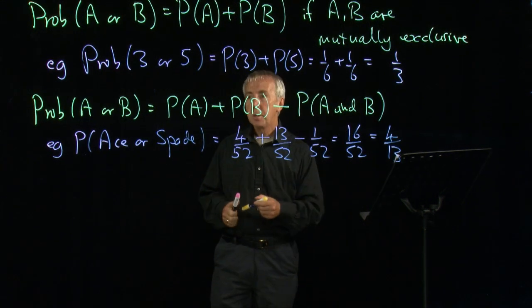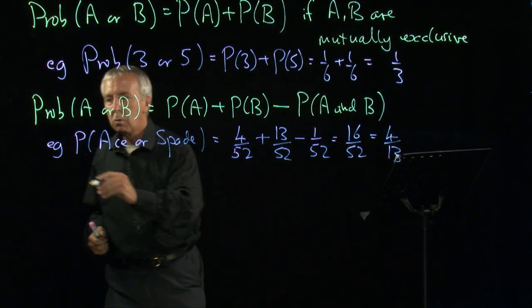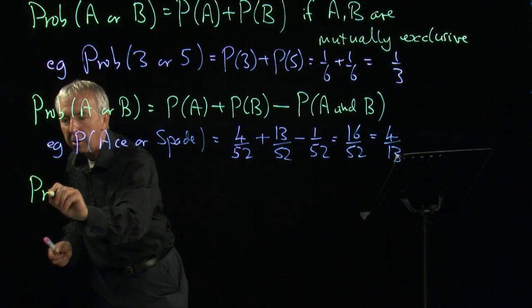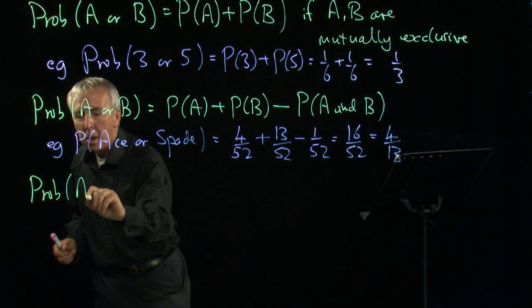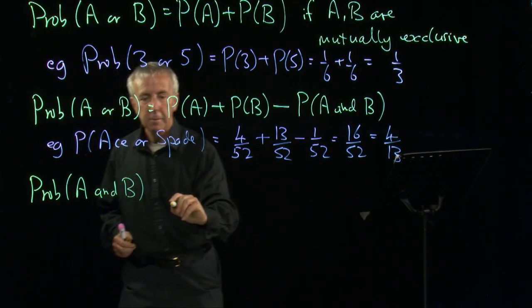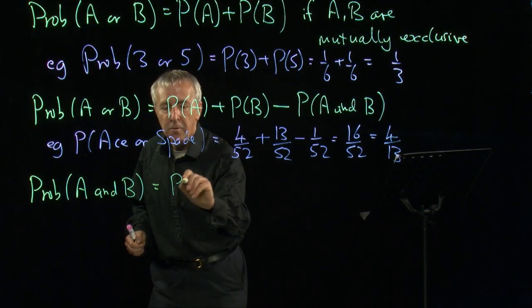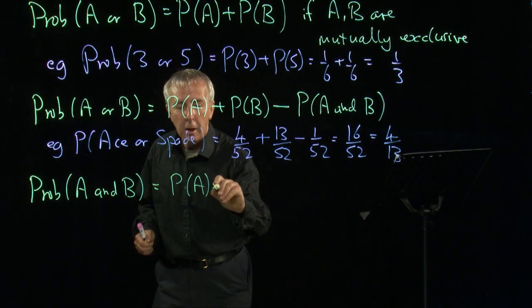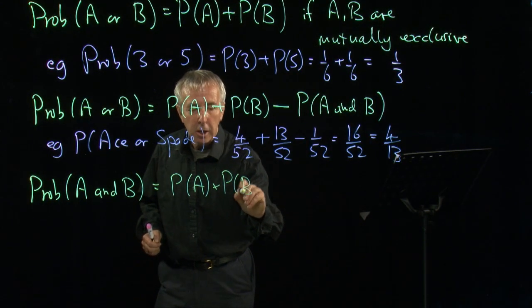So we need to be aware of that correction term when the two events can both happen together. The third rule is what we often think of as and, the chance of A and B. And this is found by multiplying the two probabilities together.